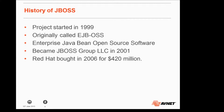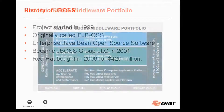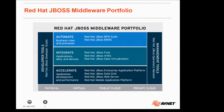The Red Hat JBoss middleware portfolio, as it stands today — this will change because it's constantly getting bigger and different things get pulled in. The way they market and split it up is: Automate, Integrate, and Accelerate.